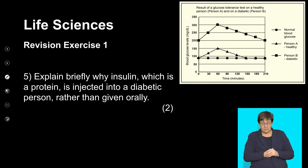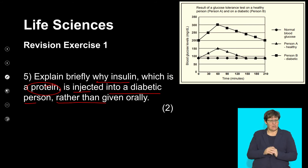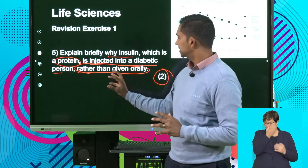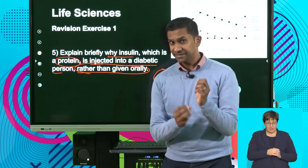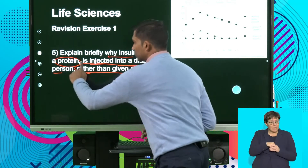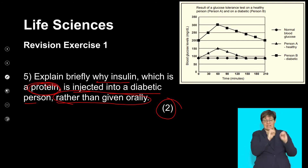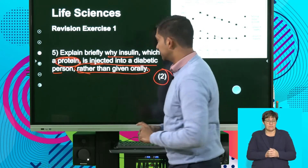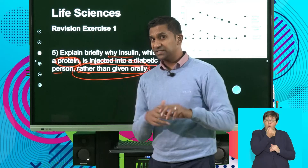Question 5: Explain briefly why insulin, which is a protein, is injected into a diabetic person rather than given orally. This is a two-mark question. Insulin is a hormone and is protein-based. Remember that insulin is injected into the bloodstream and travels to the cells to allow them to absorb glucose. The question points to why it is injected rather than given orally. Think about the pathway of insulin as it moves from the mouth — it would need to move down the esophagus into the stomach.